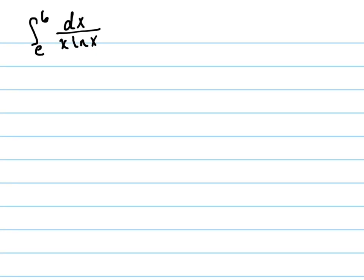Alright, let's take the derivative of this integral right here. Notice it's a definite integral because they're giving me the limits here: e and 6. So the first thing to do, we're going to use u-substitution again. I have to pick out what I want my u to be, and this is sometimes the hardest part — figuring out what the u is.